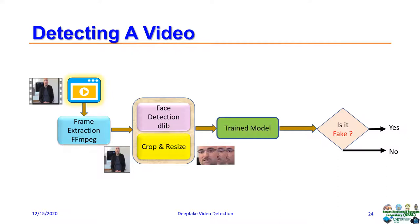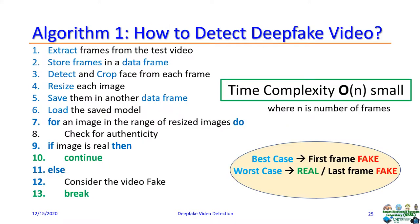For detecting a video, the same video processing steps are applied, and each cropped and resized face frame is passed through the trained model, which gives us the result of whether the video is fake or not. Our proposed algorithm continues computation when a frame is real, but when a frame is detected as fake, it stops computing and labels the video as fake. The best case scenario is when the first frame is fake; the worst case is when the last frame is fake, or the video is real.